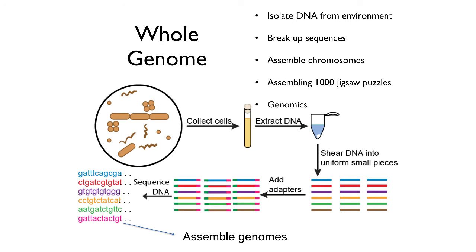For example, you can determine what type of metabolism the microbe may use. Using amplicon sequencing and whole genome sequencing, it is possible to take a census of all the microbes of any environment, including the human body, without having to culture anything.